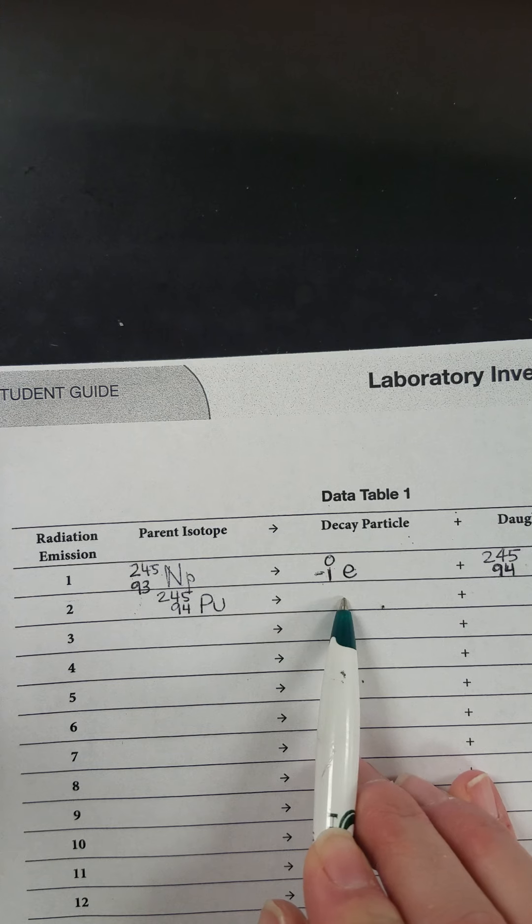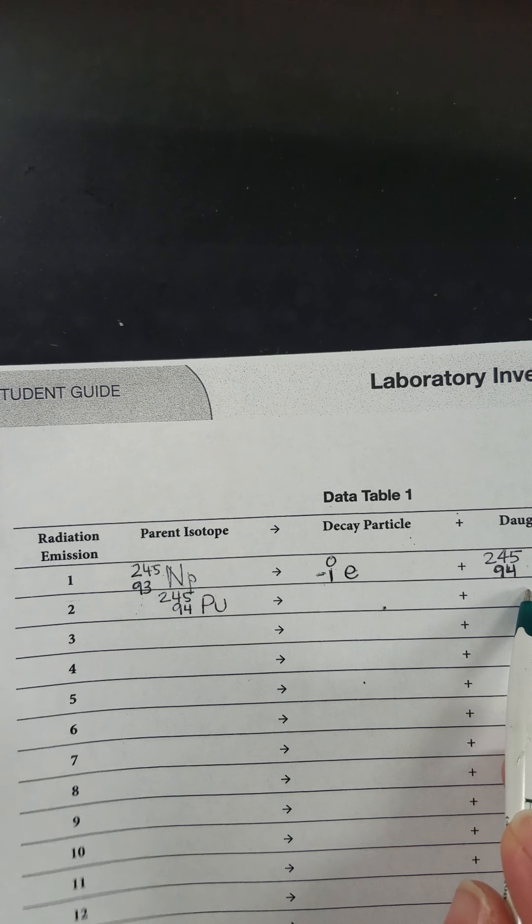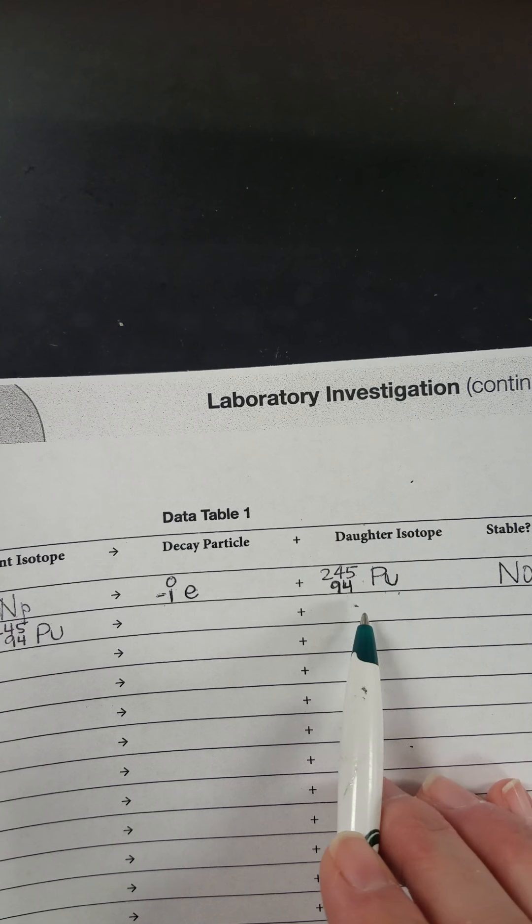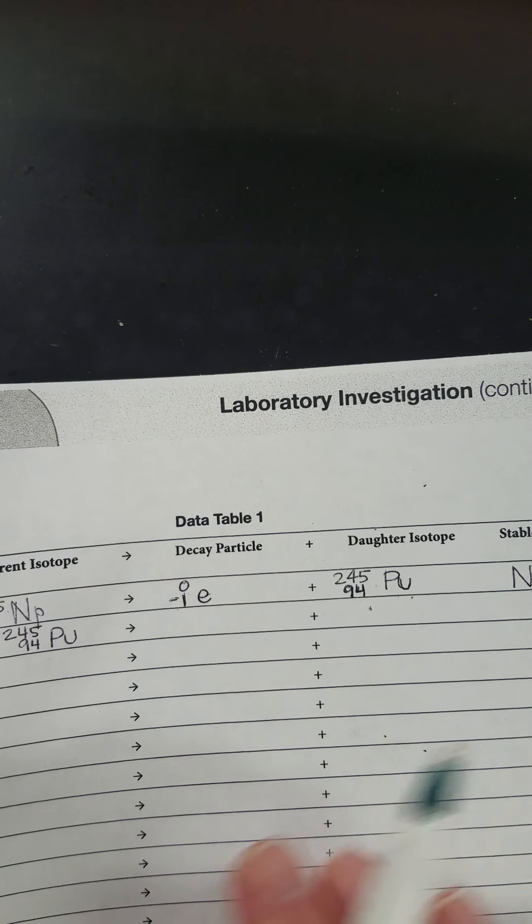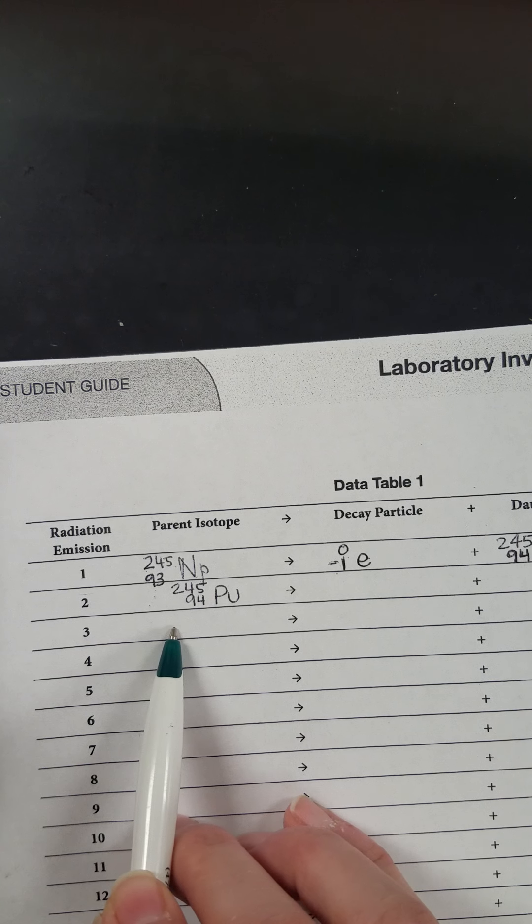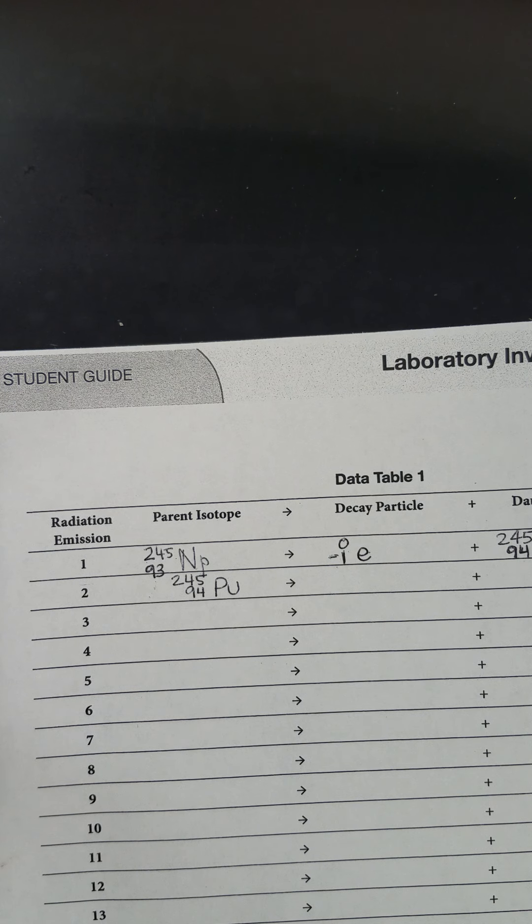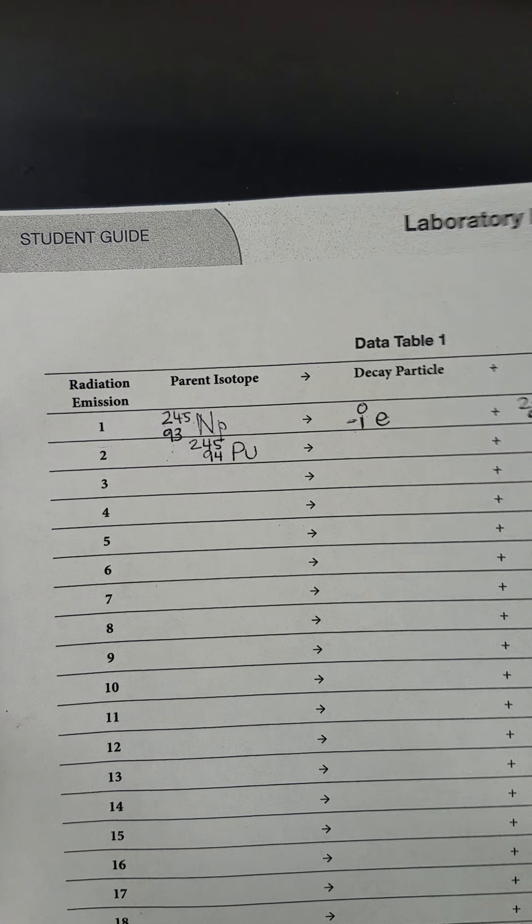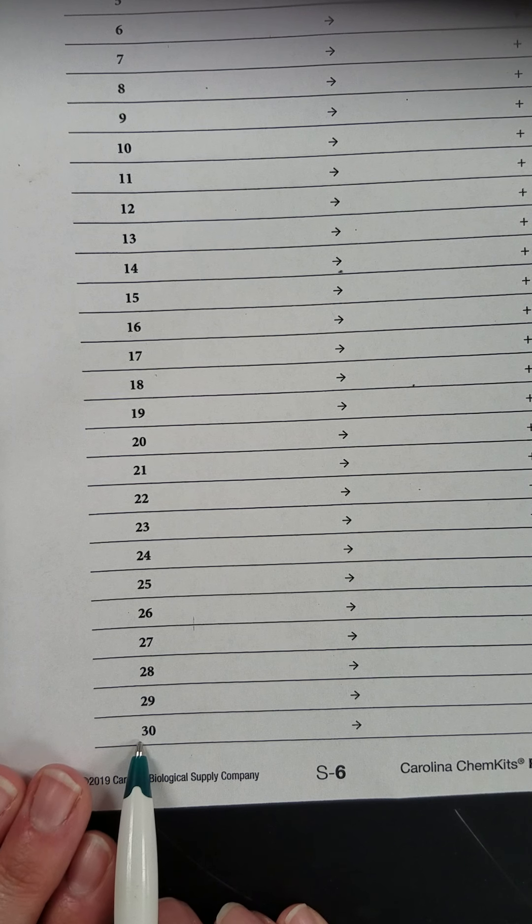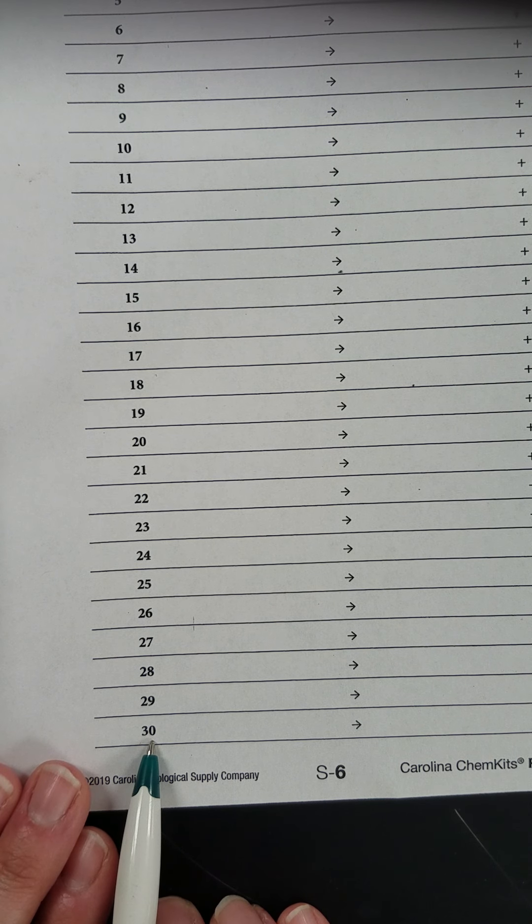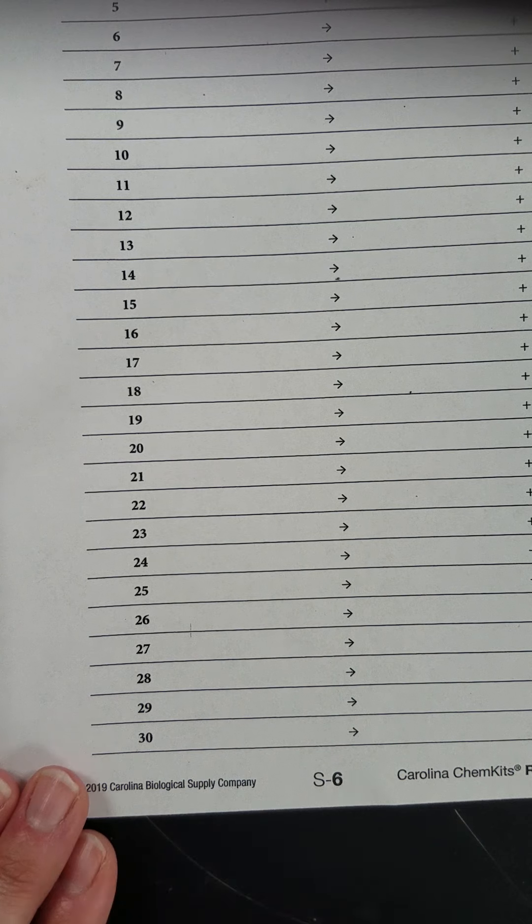You'll fill that in from the pictures. Fill in your daughter isotope here. Determine if that's stable or not here. And then your daughter isotope for number two becomes your parent isotope for number three. And we're going to continue working this until we get to a stable isotope, or we get all the way down to 30 decays and we still don't have a stable isotope. We'll stop at 30. Otherwise we'll stop before we get to 30.